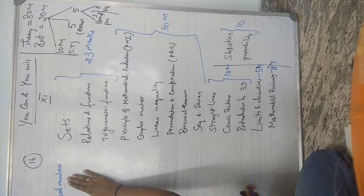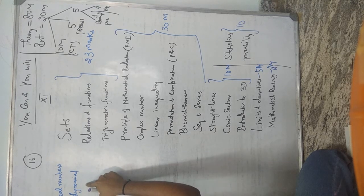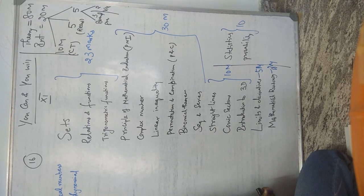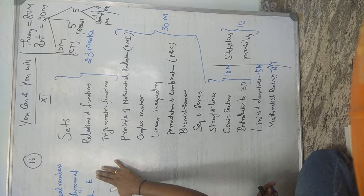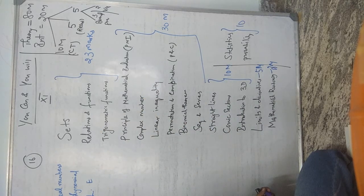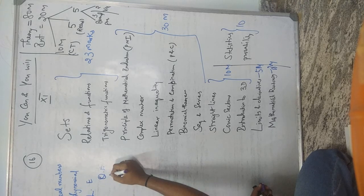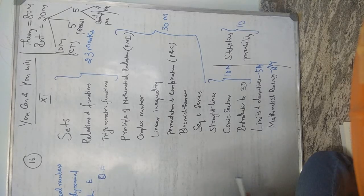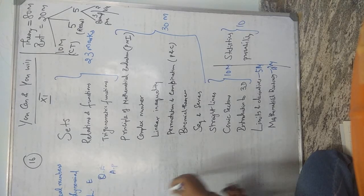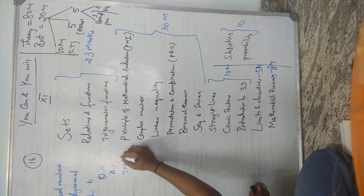From Polynomials, the long division method will be used in Class 12. From Linear Equations in Two Variables, solving two simultaneous equations will be used anywhere in Class 11 and 12. From Quadratic Equations, the quadratic formula will be used across Class 11 and 12. From Arithmetic Progressions, the Aₙ and Sₙ formulas will be used. Triangles — only the property that three angles sum to 180° is useful; the rest is not needed.